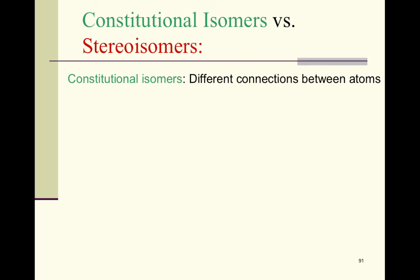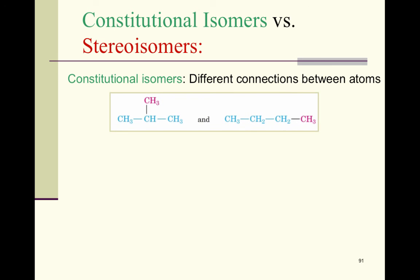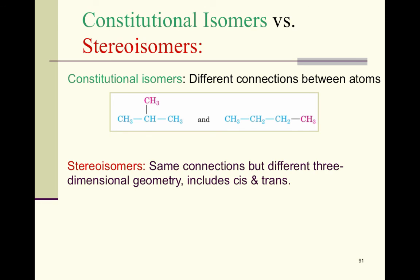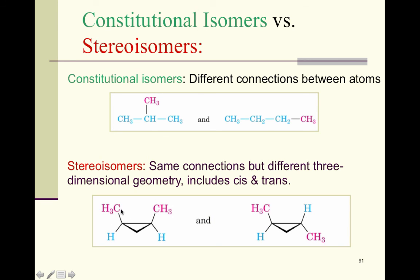What we just introduced — cis and trans — are known as stereoisomers. Constitutional isomers have different connections between atoms (e.g., straight-chain butane vs. 2-methylpropane — same molecular formula, different structure). Stereoisomers have the same connections but differ in three-dimensional geometry, and that includes cis and trans. Both cis- and trans-1,2-dimethylcyclopropane have the same name without the prefix, but differ in geometry.